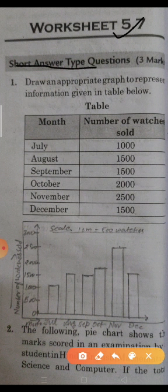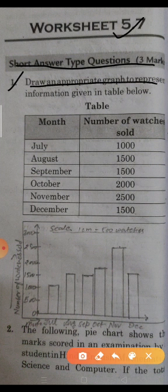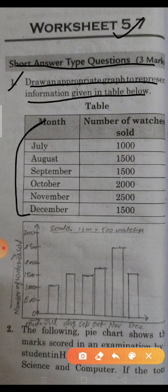So it is short answer type questions, and each question has 3 marks. Read the question first: draw an appropriate graph to represent information given in the table below. Students, this is the month given, and number of watches are shown in the different months. So this data, this information, we have to show by bar graph.